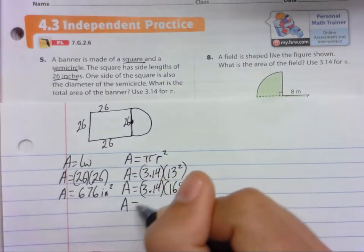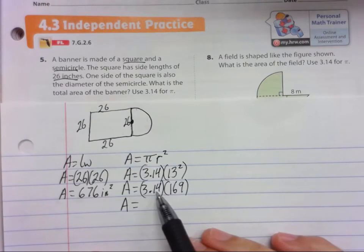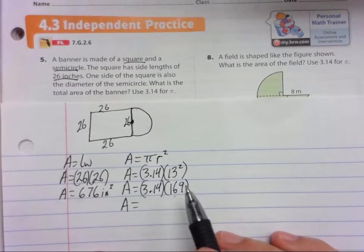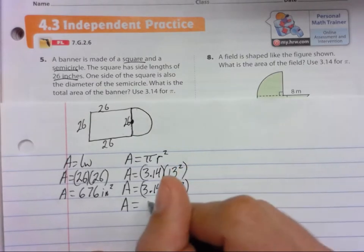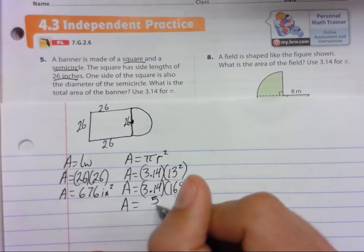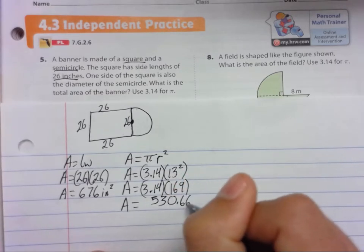And now we're going to solve. So 3.14 times 169. When you multiply that, go ahead and do it in the calculator. And you will get 530.66 square inches.